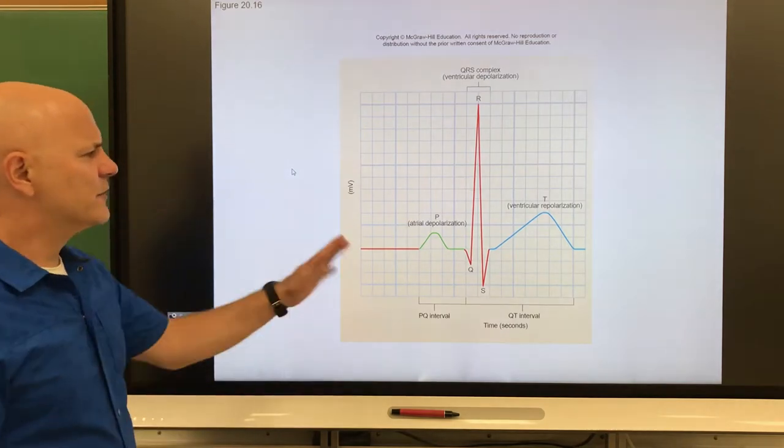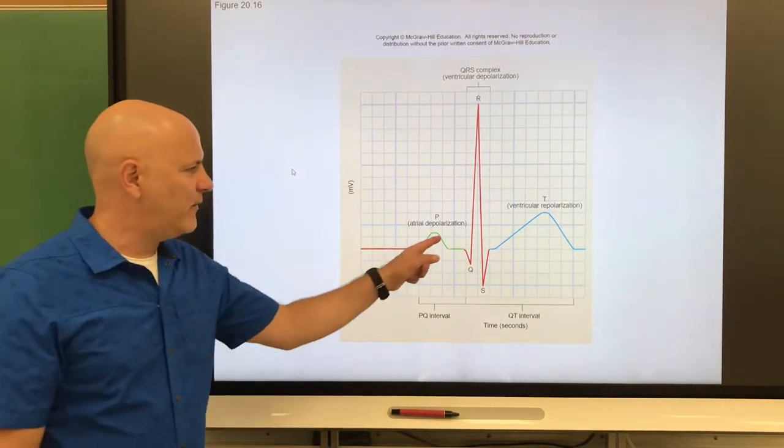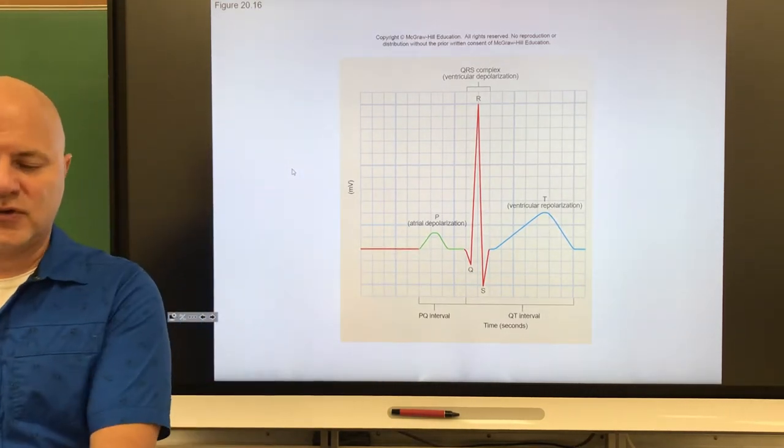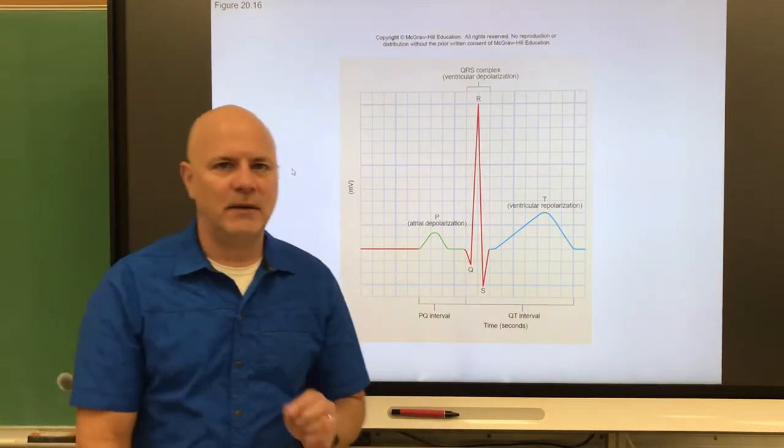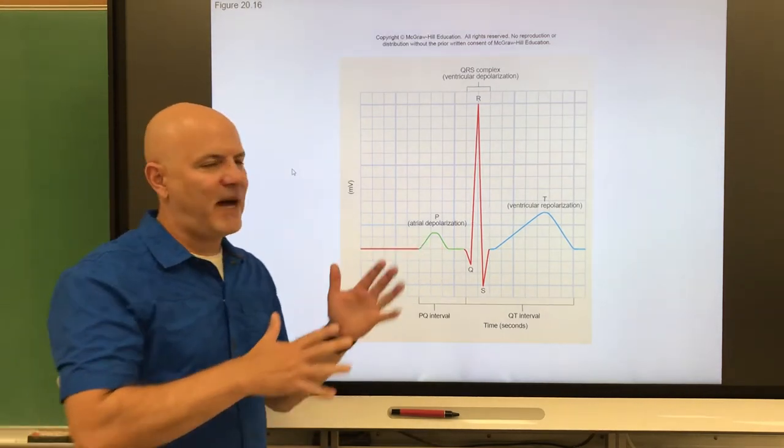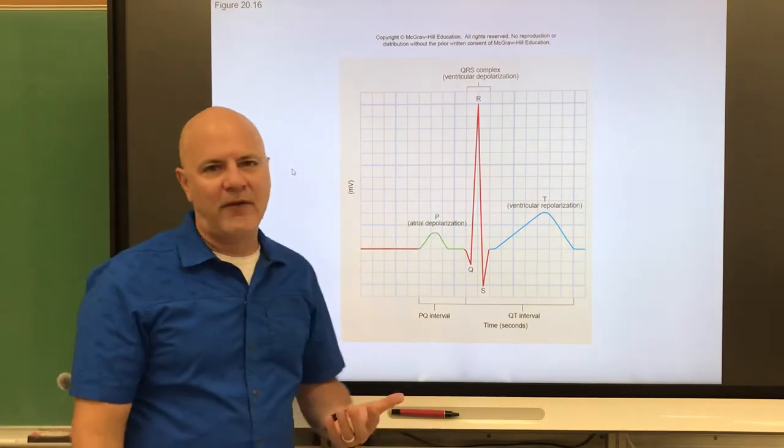This is showing a typical electrocardiogram. The first wave that we see here is called the P wave, and this is caused by depolarization of the atrial walls. Remember, depolarization means sodium diffuses in. So that's what's happening here. Now this corresponds to our atria contracting, which is going to occur right after that.